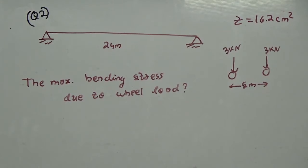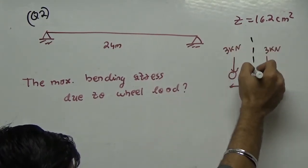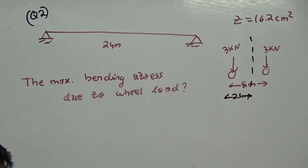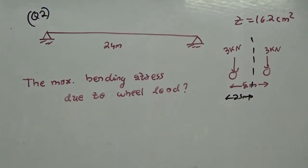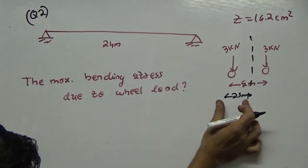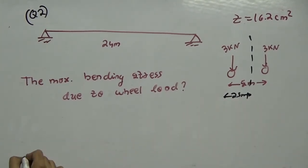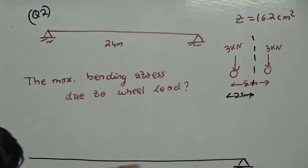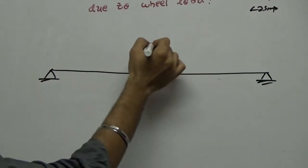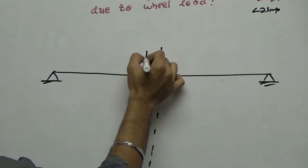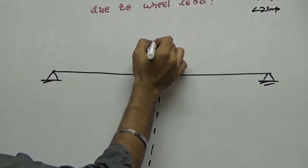In order to analyze this problem, first you need to find the CG of the wheel loads. Obviously it will be at the center — 2.5 meter. As explained in the influence line diagram lectures, you divide this CG by 2 and keep it over the beam center. So this is my simply supported beam, and I am keeping 3 kilonewton at a distance of 1.25 from the center.